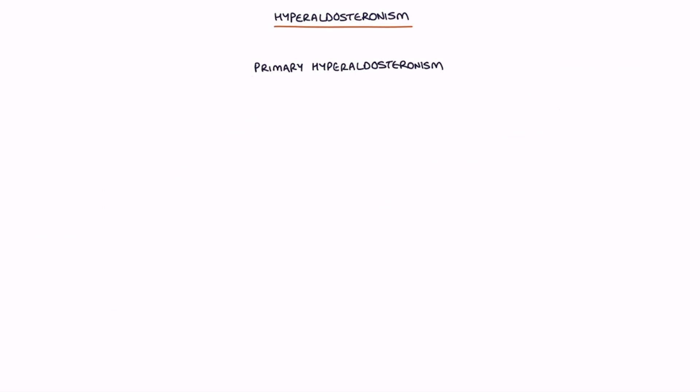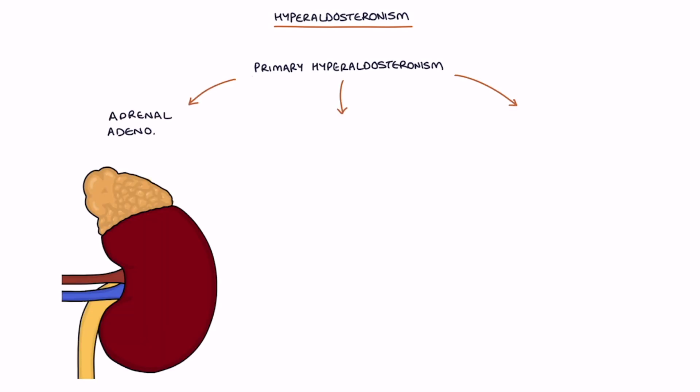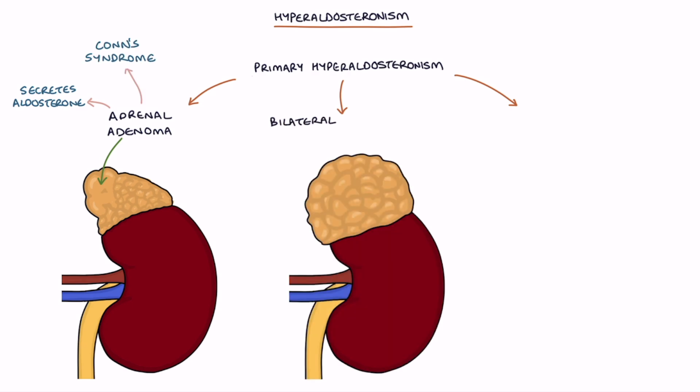The adrenal glands may be producing too much aldosterone for several possible reasons: an adrenal adenoma, which is a hormone-secreting tumor that secretes aldosterone and was originally called Conn's syndrome; bilateral adrenal hyperplasia, which is enlargement and over-functioning of both adrenal glands; and familial hyperaldosteronism, which is a rare genetic condition.